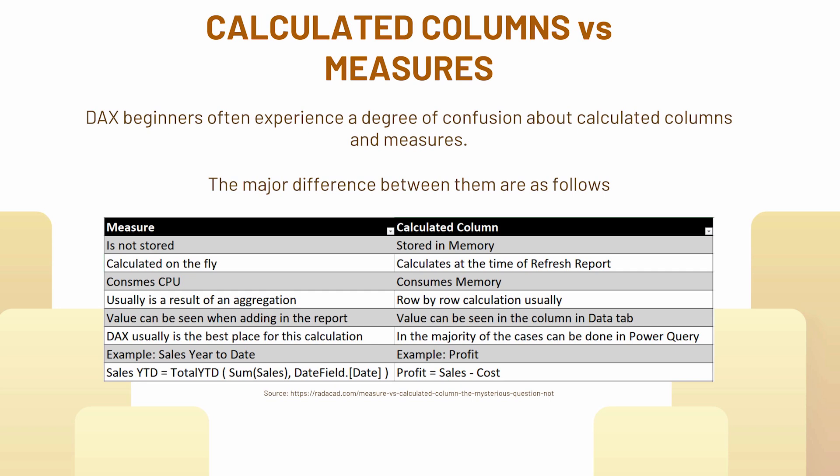Both calculated columns and measures use the DAX formula language, but there are important differences. Measures are never stored inside your data model, whereas calculated columns consume memory inside your data model. Measures always calculate on the fly, while calculated columns only calculate at the time of report refresh — if you don't refresh, the value stays the same. In terms of memory consumption, calculated columns consume RAM, whereas measures are calculated on CPU.